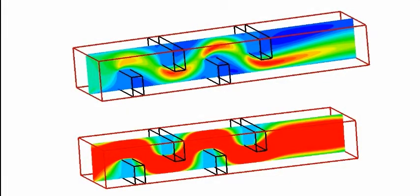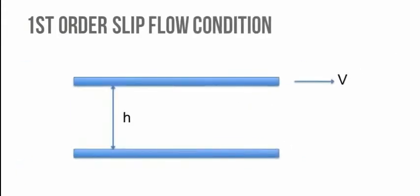The picture shows the flow through a corrugated channel at small and moderate Knudsen numbers. Slip velocity at the walls in the latter case, absence of recirculation, and homogenization of the flow are clearly visible.